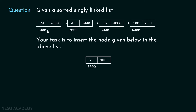Here the first element is 24, second is 45, third is 56, and fourth is 100. If we try to place 75 in this list, then we have to place it after 56, so that the elements remain in ascending order. No other information is given about position — we simply know we must maintain the order of the list.